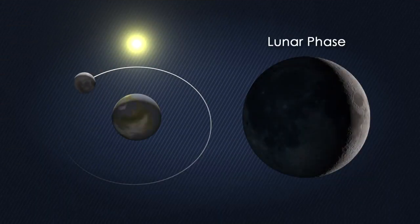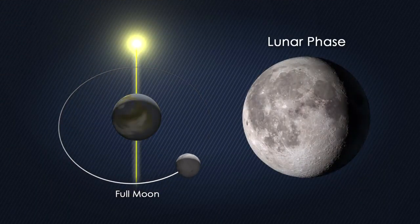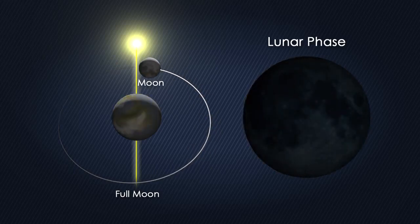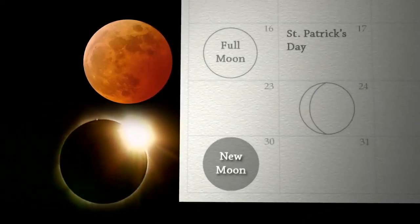But the moon circles the Earth every month as it cycles through its phases, lining up at both full moon and new moon. So why don't eclipses happen twice a month?